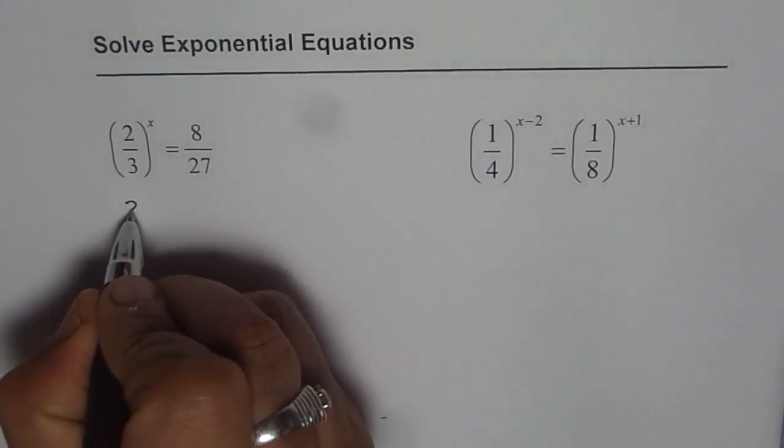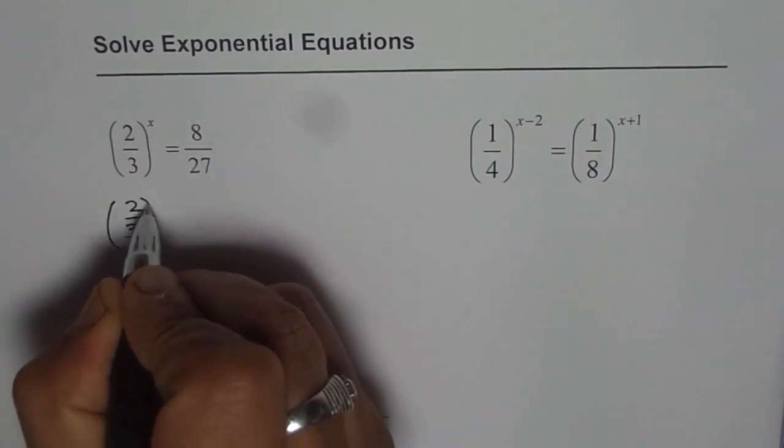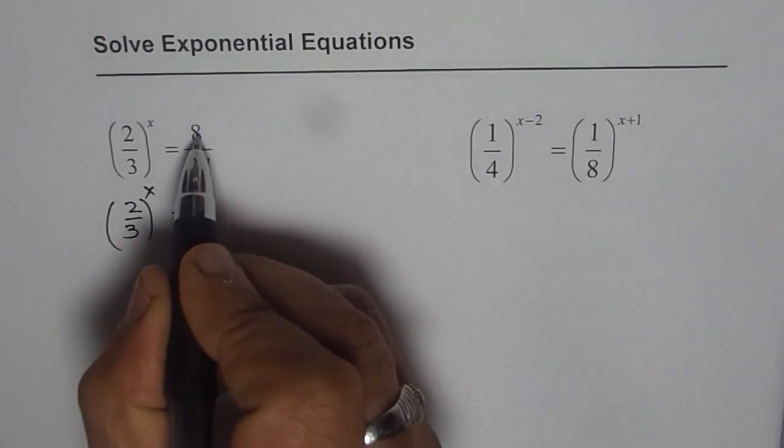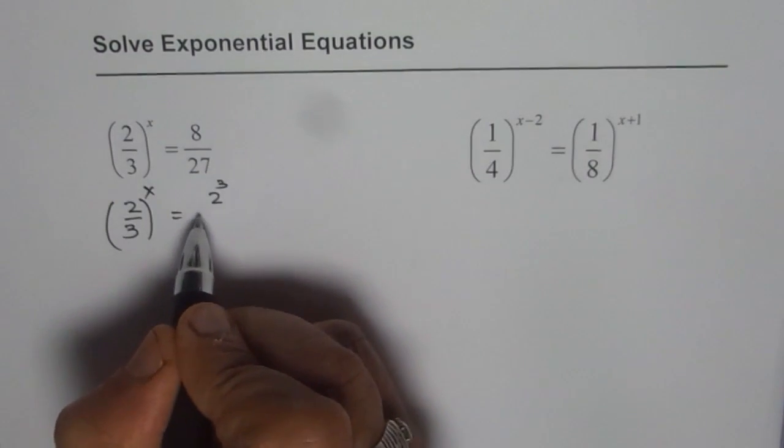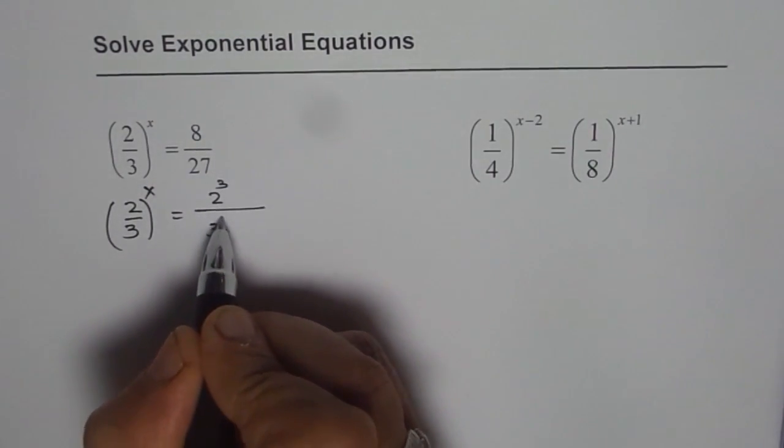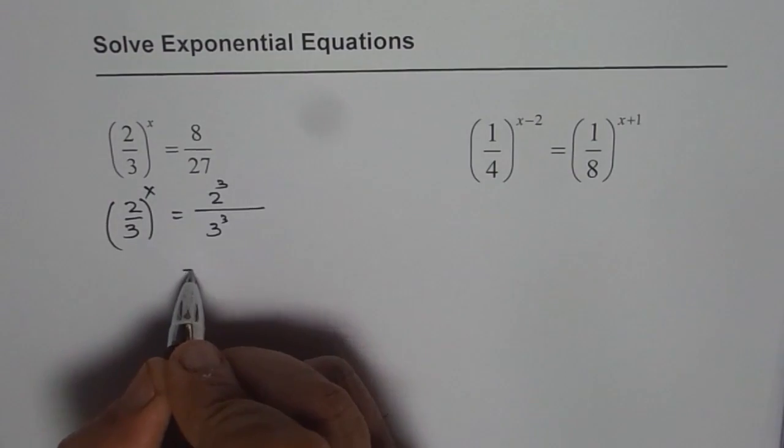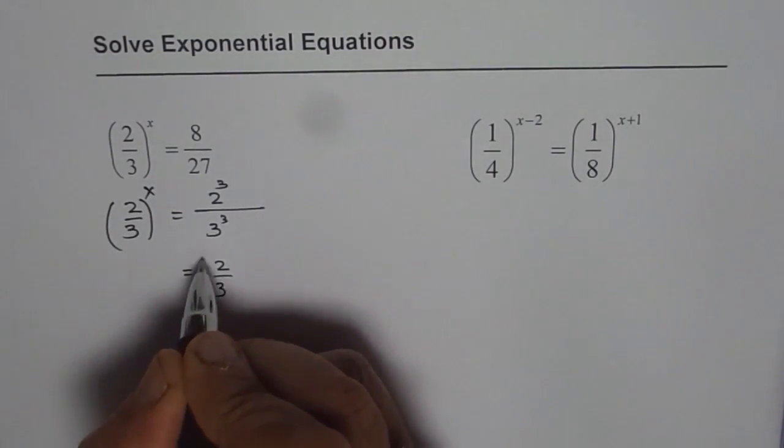So, we can write this equation as 2 over 3 to the power of x equals 2 cubed, which is 8, over 3 cubed. So that gives you 2 over 3 to the power of 3.